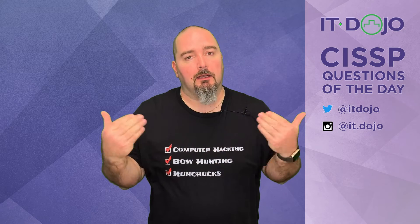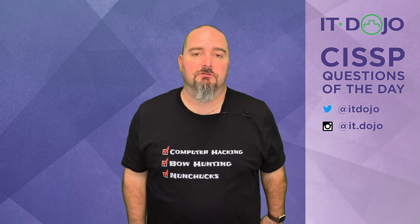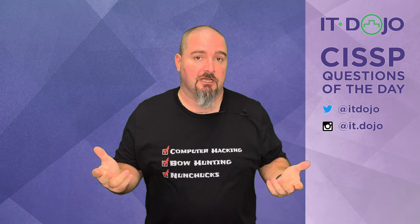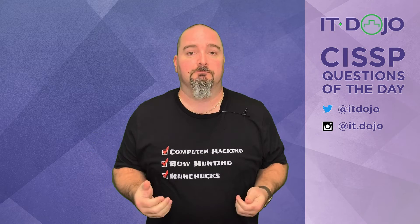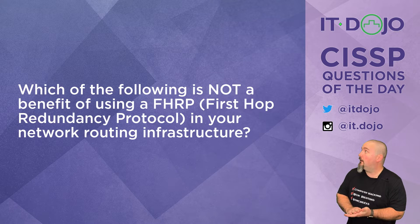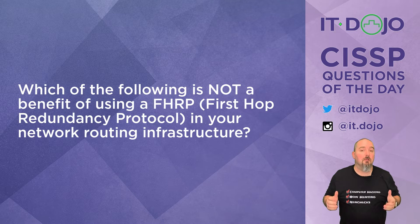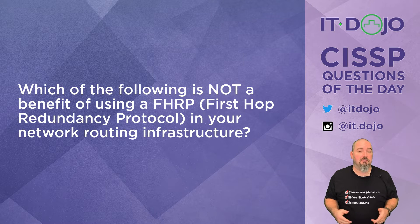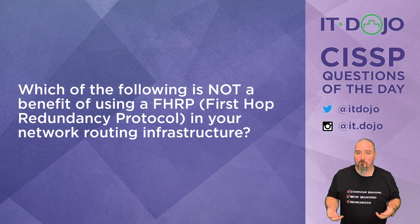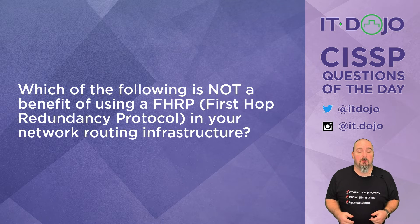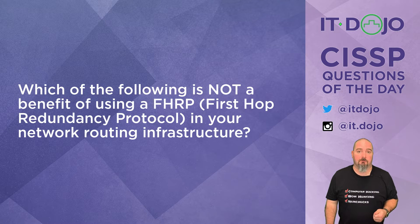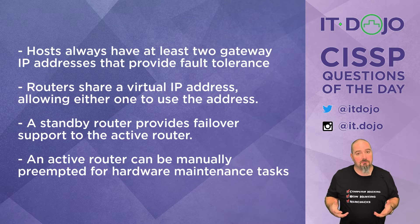Hey everybody, welcome back. I'm Colin Weaver with the IT Dojo CISSP Questions of the Day, where each and every time I come at you I'm bringing you two questions to continue studying for your CISSP exam. Question number one: of the choices I'm going to put up for you, which one is not a benefit of a first hop redundancy protocol configuration in your enterprise routing architecture? Which of these is not a benefit of FHRP? Go ahead and look those over, think about it, click pause, and when you're ready click play and I will walk it through.